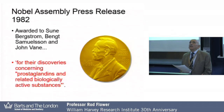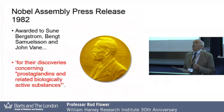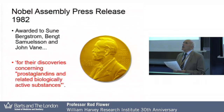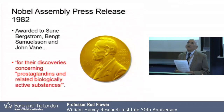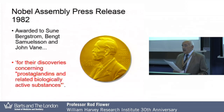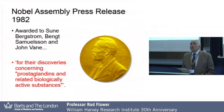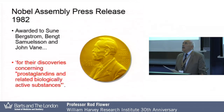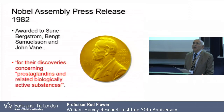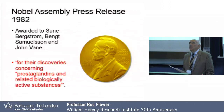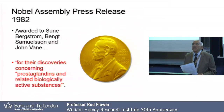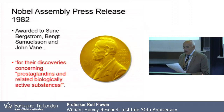Bengt's work at this time also clarified another mystery which John Vane's group was working on — what was this mysterious substance called RCS, rabbit aorta contracting substance. Bengt established that this was, in fact, what we now call thromboxane A2. And it was Bengt's generosity in sending samples of these unstable endoperoxides to our laboratory at the Wellcome Foundation which enabled us to progress the project that eventually led to the discovery of what was called prostaglandin X, but which we now know as prostacyclin.